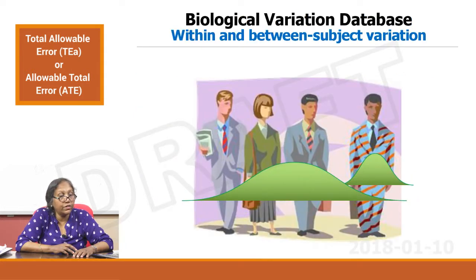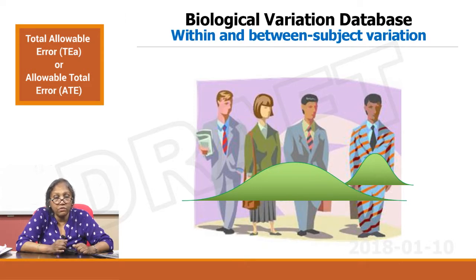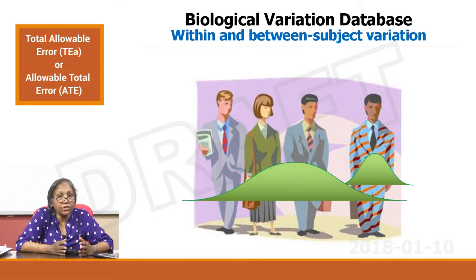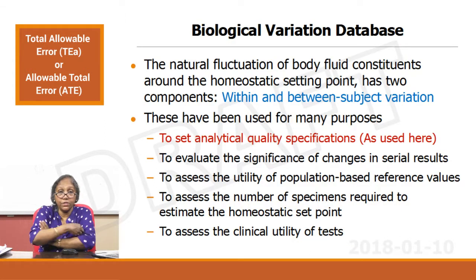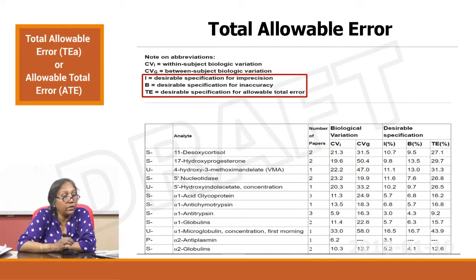Your second option is your biological variation database chart, available on the Westgard site as a free download. Biological variation means that within every individual there is a Gaussian distribution. For example, if you take a sample from your left hand versus your right hand there may be variation; morning versus evening there may be variation. So there is intra-individual variation and inter-individual variation for every analyte, and within a group of people there is again biological variation. In this video we are talking about using it to set analytical quality specifications. This is a snapshot of a BV database.